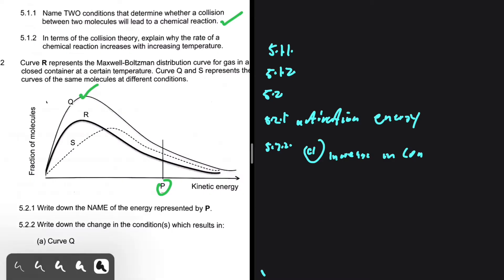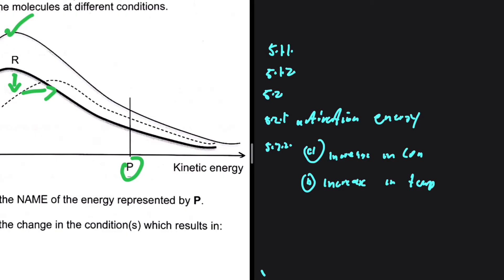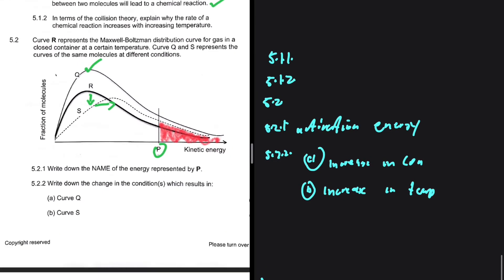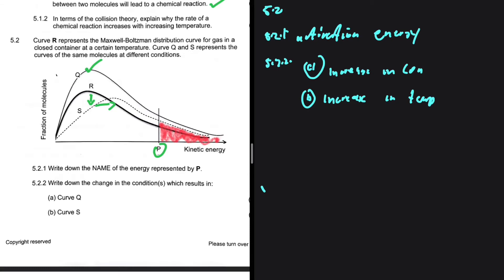And then now, curve S. What is the difference between curve S and curve R? Well, the peak went down and it shifted to the right. That is what we expect to see when there is an increase in temperature. So in curve S, there is clearly an increase in temperature. If you look at curve R and curve S, you will realize that for curve S, we have more molecules that have a kinetic energy that is equal to or greater than the activation energy. That is because there's been an increase in temperature in curve S.